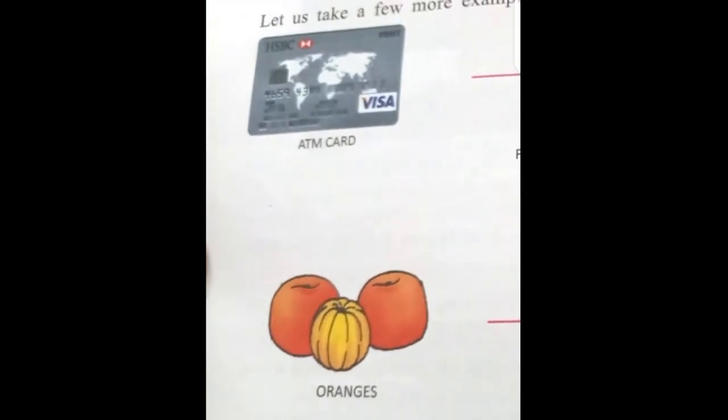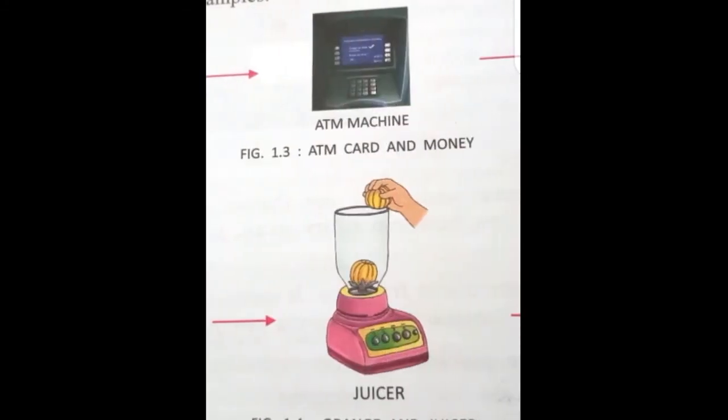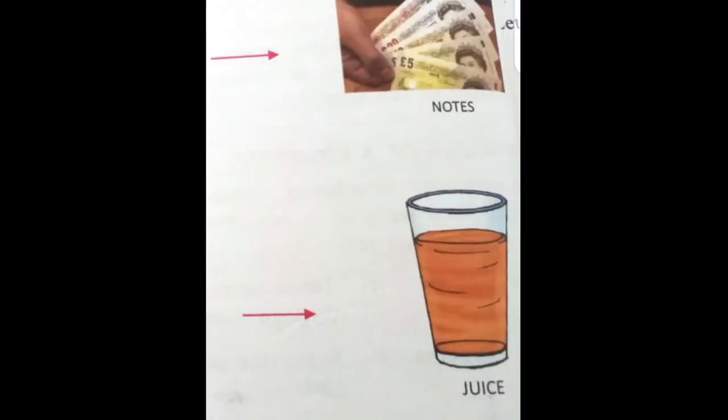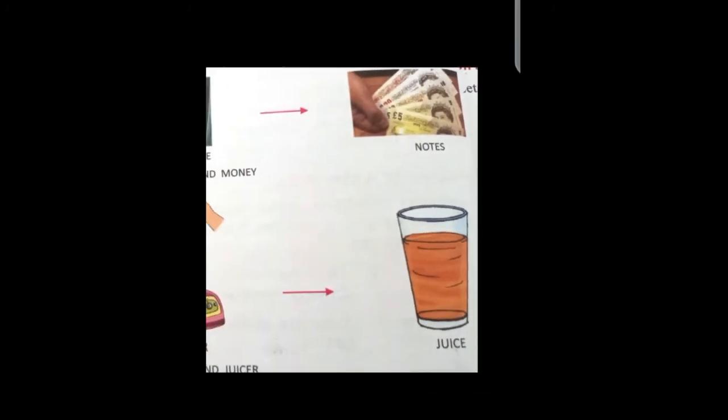One more simple example that is also in your book. You have different oranges. You put those oranges in the juicer machine. Then you grind them and what result do you get? You get juice. So whenever you want to do anything, first it is necessary that we do the input, then the input is processed, and then we get the result, which in computer language is called output.